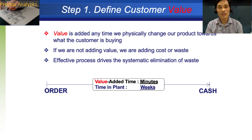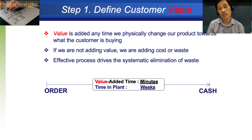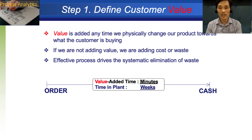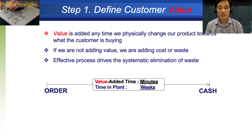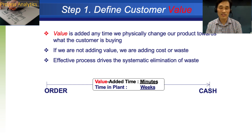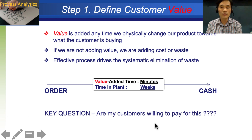The first step is to define customer value. Value is what the customer is buying from the value stream. For example, a total value stream may provide a storage cabinet to an end customer — the value they are buying is an orderly organized area. In this Sasha and Andy exercise, the customer values are good food and best service. Price is not as important at this point. What Sasha and Andy should keep asking is: are my customers willing to pay for this service?